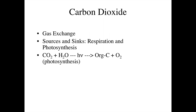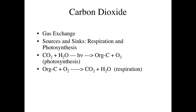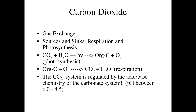Here are our generic reactions for photosynthesis: CO2 plus water and light produces organic carbon and oxygen. Organic carbon plus oxygen can produce CO2 and water through respiration. The CO2 system is then regulated by the acid-base chemistry of the carbonate system, and the general pH range is between 6 and 8.5.